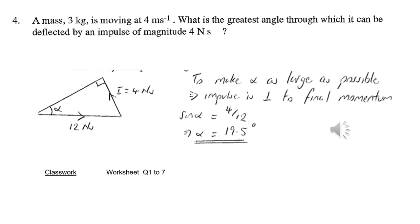To make the angle of deflection as large as possible, the impulse will have to be perpendicular to the final momentum. So, if we draw an impulse-momentum triangle with this shown, we can then just use right-angle trigonometry to work out the required deflecting angle.